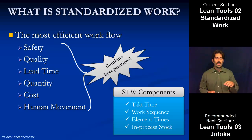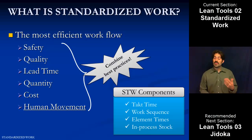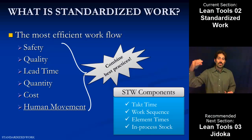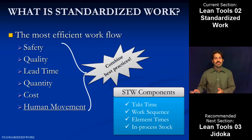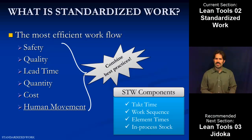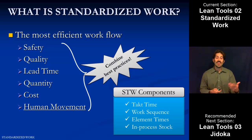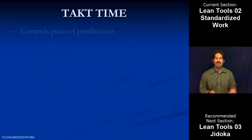There are a couple components specifically that go into standardized work in terms of how it's represented. The first one is takt time, which we're going to cover next. The next couple are the work sequence — the order that the steps are performed in — the individual times associated with each one of those steps, and then any in-process stock: where the inventory should be located and how much. It's a basic control so we can see if someone's running behind and we're piling things up, or if someone's running ahead.